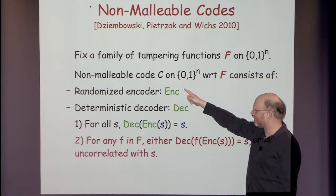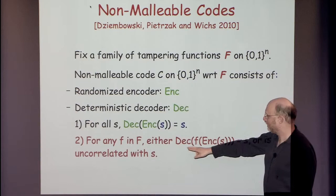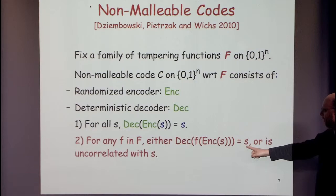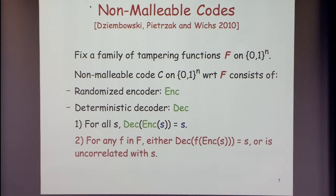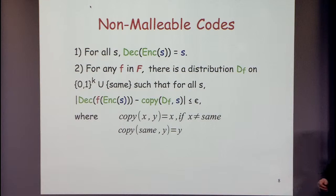We have some fixed family of tampering functions. A non-malleable code with respect to F consists of a randomized encoder and deterministic decoder that invert each other. The main point is that for any tampering function, either the decoder output equals S or it's uncorrelated with S — at least we don't have these devastating attacks where the adversary can trick you into thinking a different message was sent.